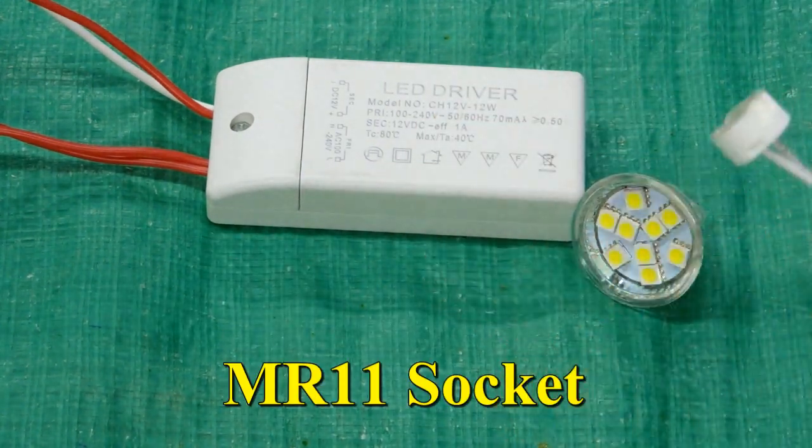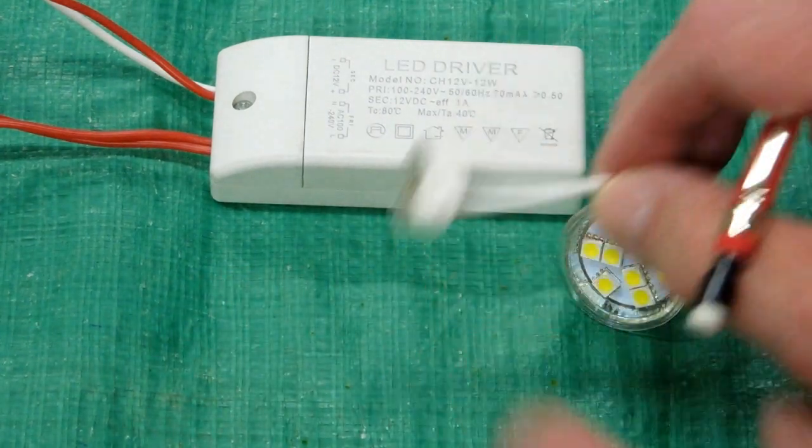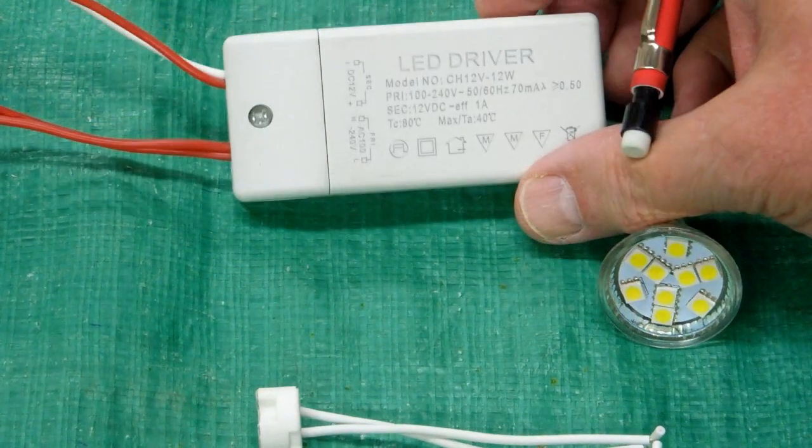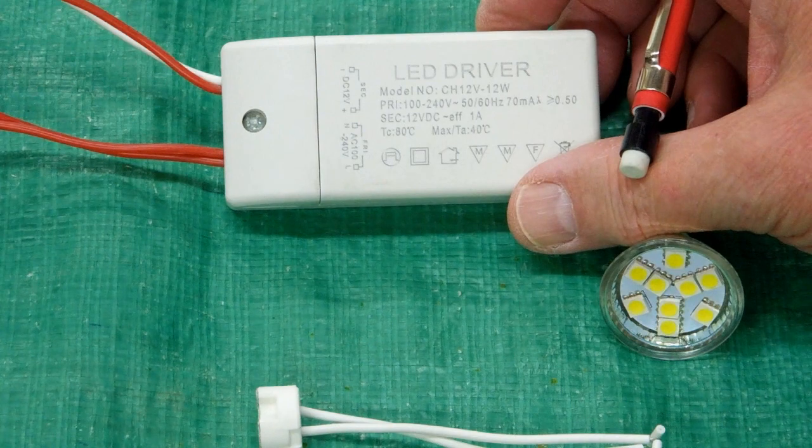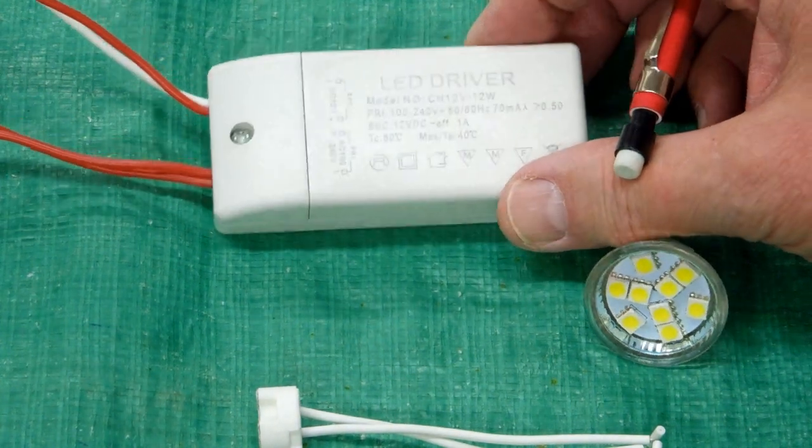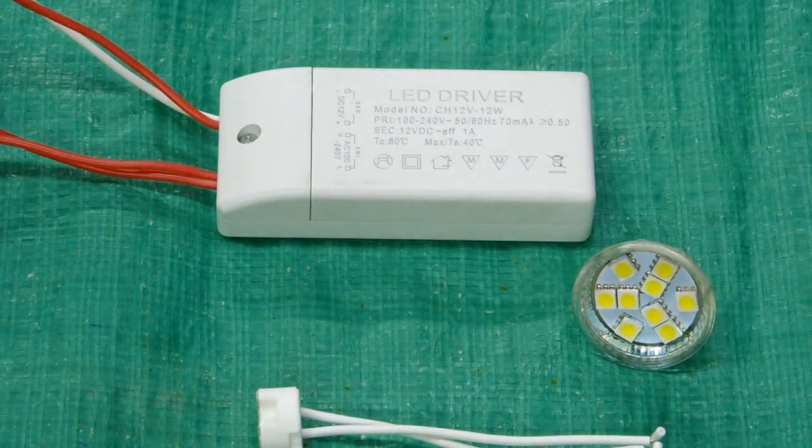The pigtails fit on the back of this bulb and then the LED driver. This is 110 to 240, 50-60 cycle line current and that converts it to 12 volt DC.